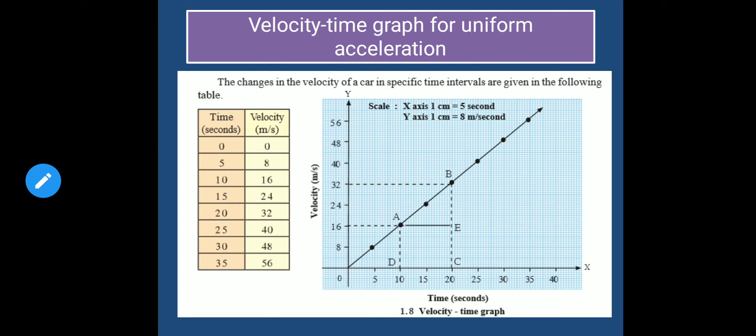For all uniformly accelerated motion, the time-velocity graph is a straight line. You can see in the picture — the graph is a straight line for uniform acceleration.